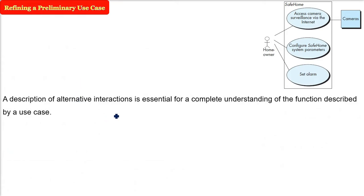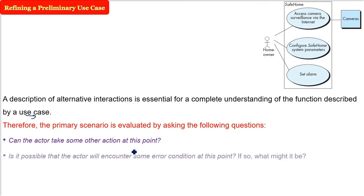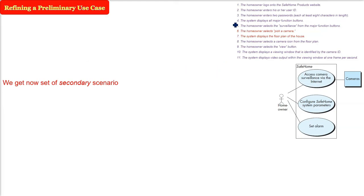Now the second step: the description of alternative scenarios or interactions is very important for complete understanding of the function described by a use case. So we need to develop the primary scenario further by asking certain questions. The interactions and alternatives: can the actor take some other action at this point? Is it possible that the actor will encounter some error condition at this point — if yes, what might it be? Is it possible that the actor will encounter some other behavior — some outside event or trigger beyond the control of the actor — what will be the behavior? We now have to develop a secondary scenario.